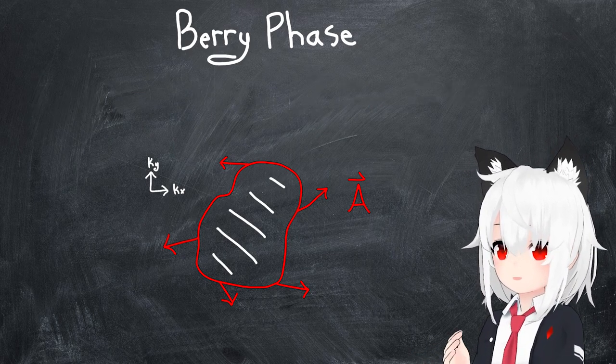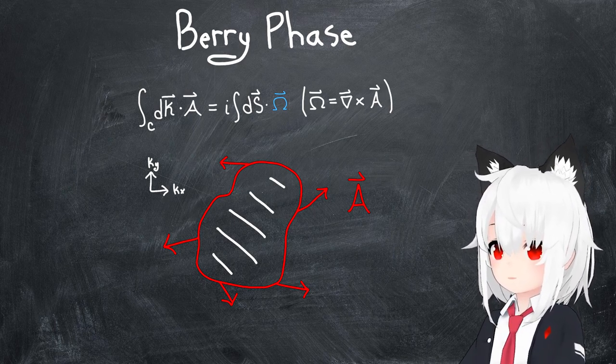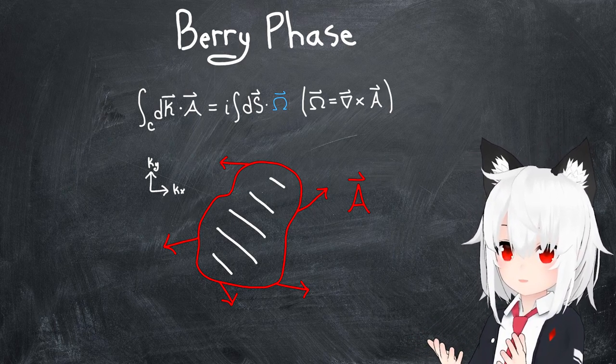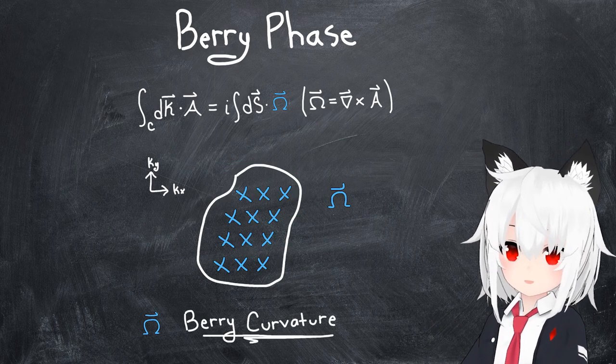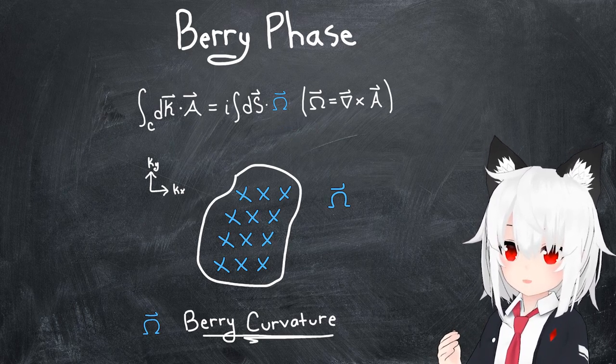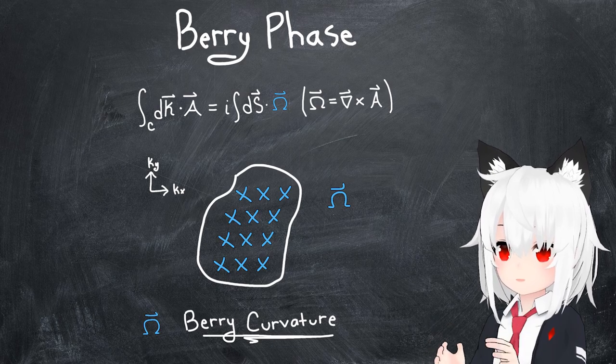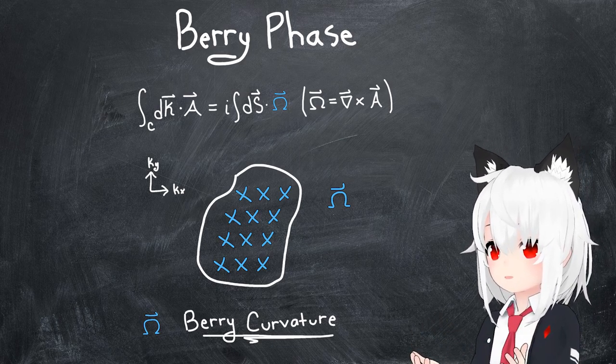Using Stokes' theorem, we can again rewrite this Berry phase as an integral over this surface, and the relevant vector field in this case would be what's called the Berry curvature. This Berry curvature can be used to define the Berry phase in terms of an integral of its flux, but the really cool thing about it is the effect that it turns out to have on the equations of motion of electrons.